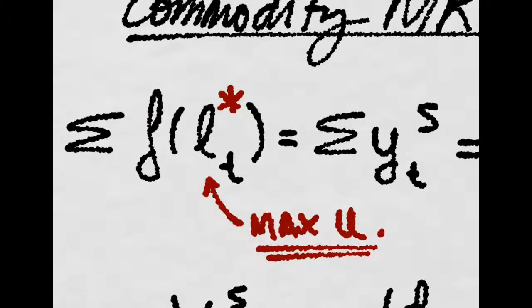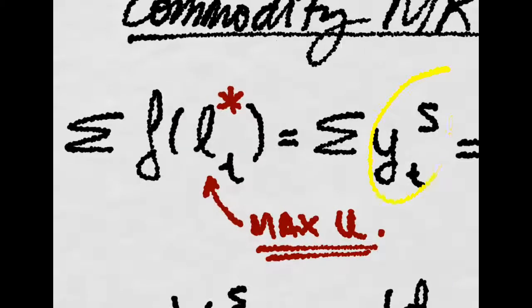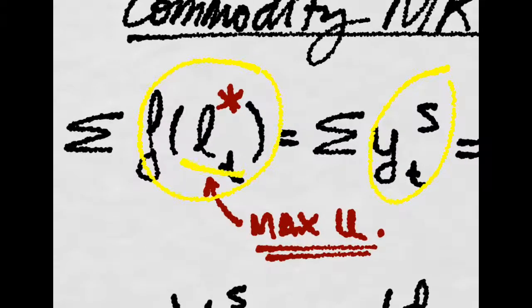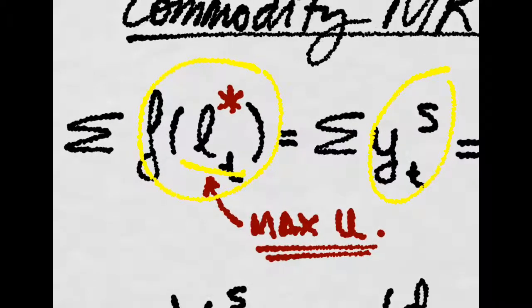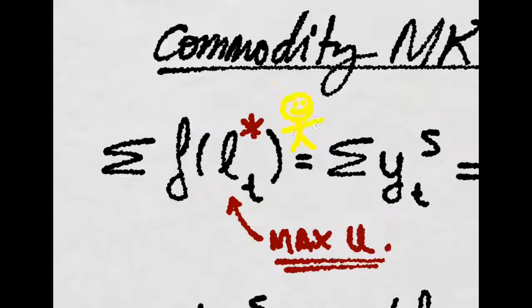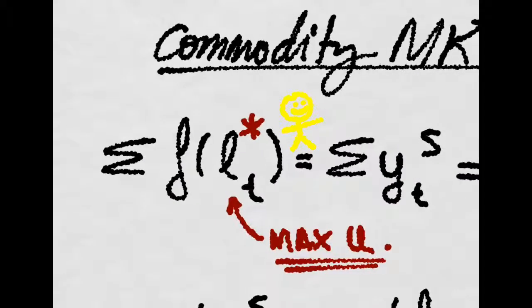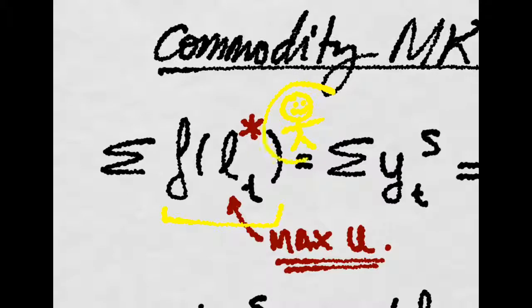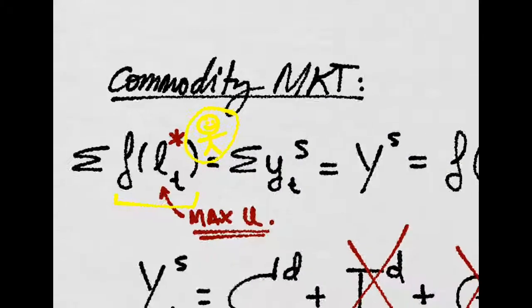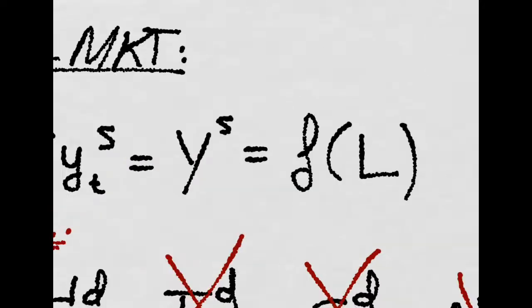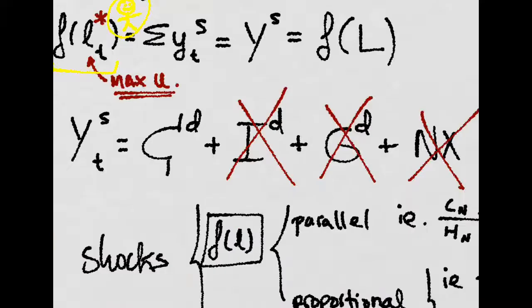Production by individuals is given by the individual production function that depends on labor. The labor that an individual is willing to work depends on his utility, which he maximizes. If we aggregate all these production functions of individuals when they are maximizing their utility, we reach the aggregate supply of the economy, which is a function of aggregate labor.